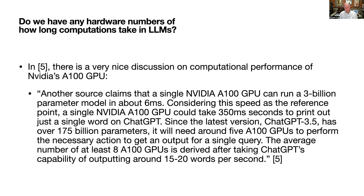In Reference 5, there is a very nice discussion on computational performance of NVIDIA's A100 GPU. Another source claims that a single NVIDIA A100 GPU can run a 3 billion parameter model in about 6 milliseconds. Considering this as a reference point, a single A100 could take 350 milliseconds to print out just a single word on ChatGPT. Since ChatGPT 3.5 has over 175 billion parameters, it will need around 5 A100 GPUs to perform the necessary action to get an output for a single query. The average of at least 8 A100 GPUs is derived after taking ChatGPT's capability of outputting around 15 to 20 words per second.